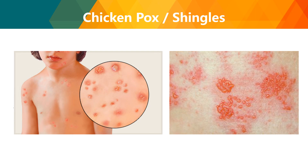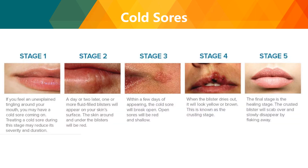Chicken pox (varicella) and shingles: shingles resembles chicken pox but is more painful and takes longer to heal. Cold sores (herpes labialis) appear around the lips and mouth, reflect changes in weather and immune system level, and progress through five stages with the final stage being the healing stage.